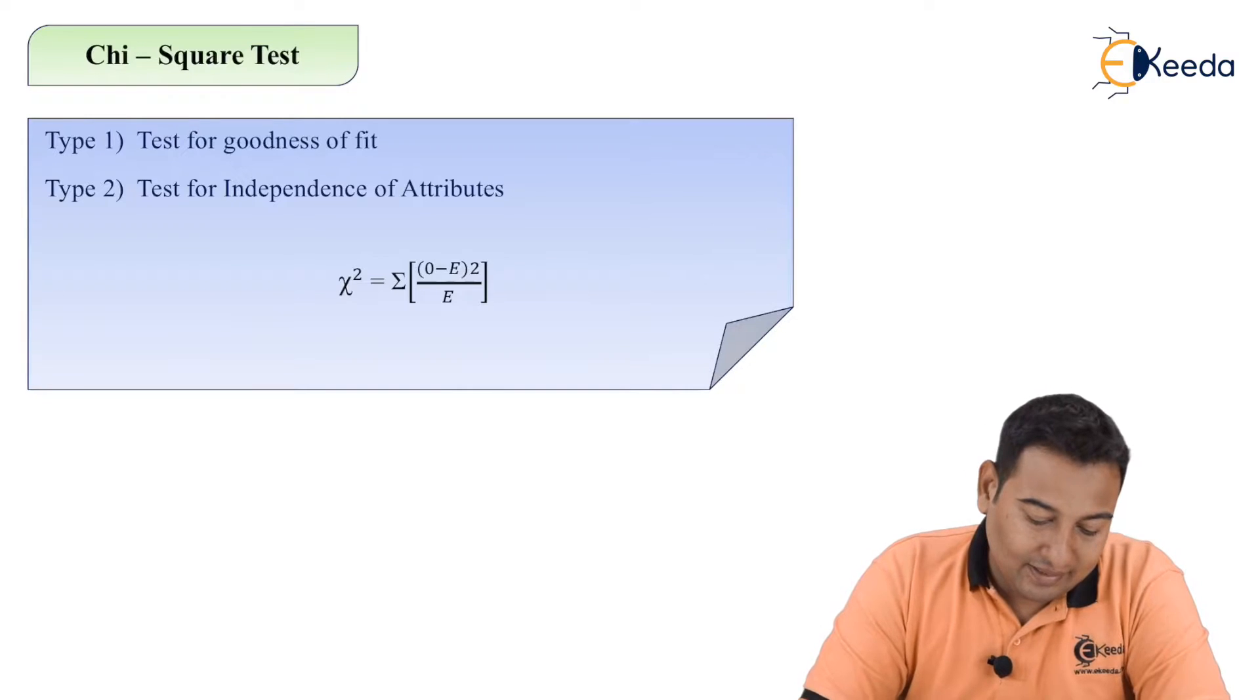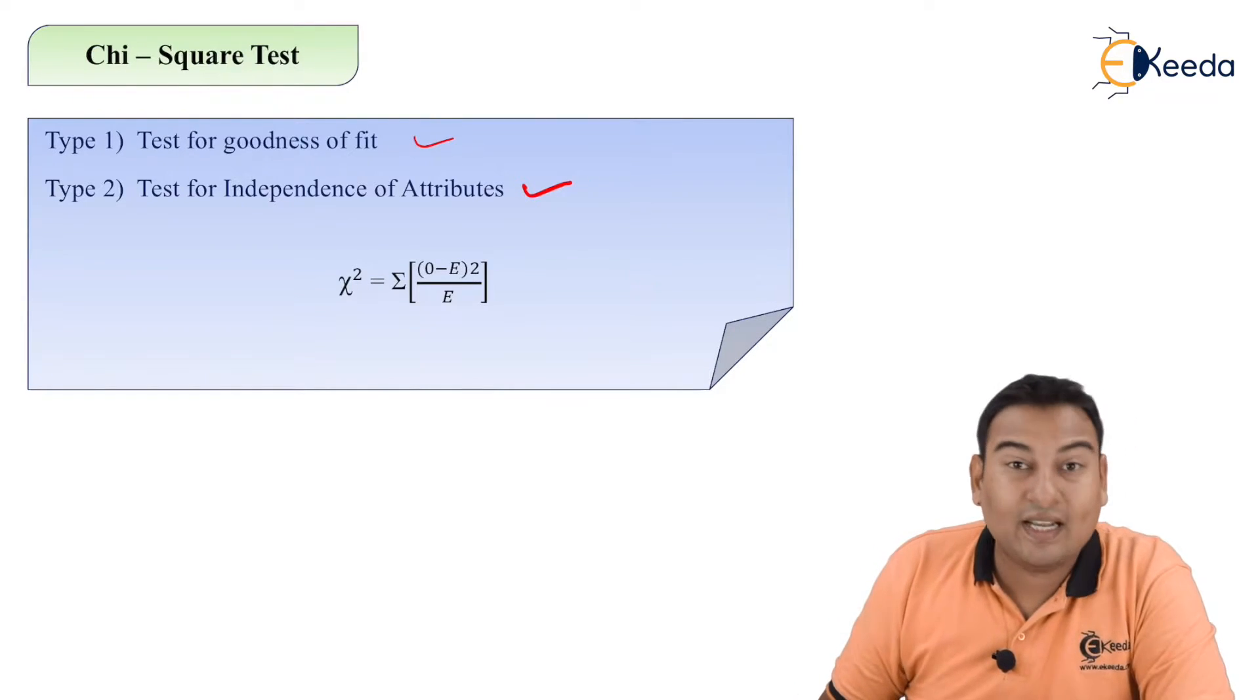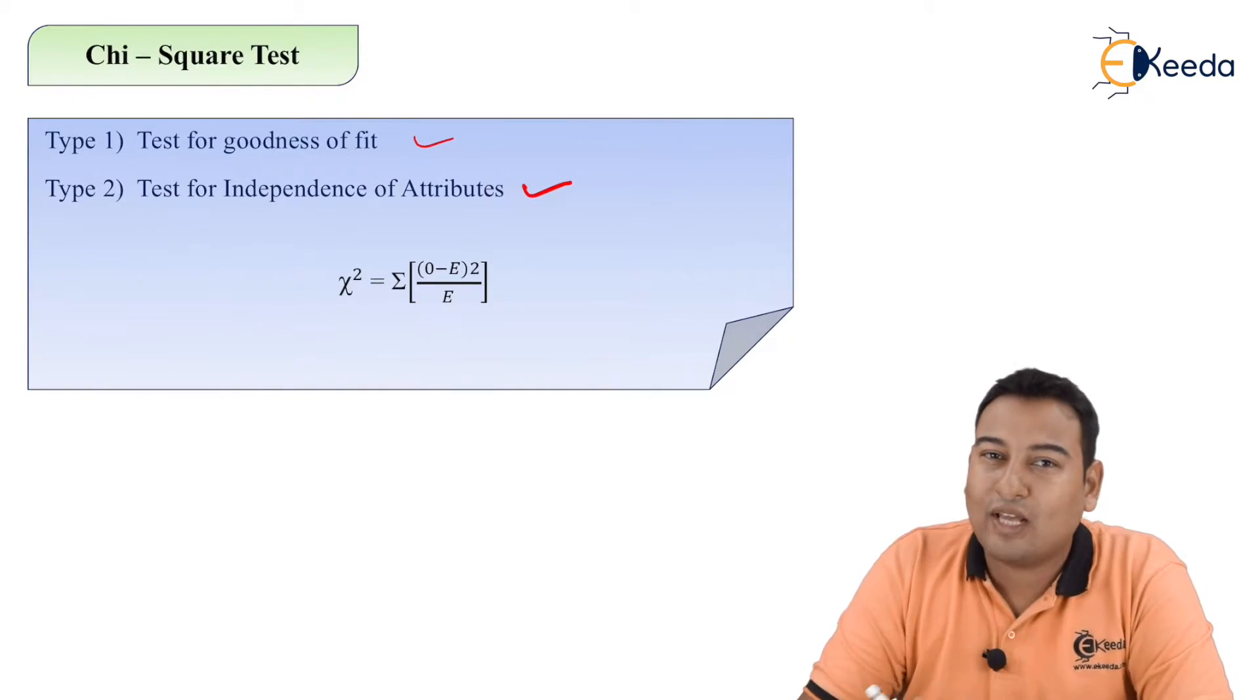Always remember, if problem is of sampling type you will get the words like mean, standard deviation, sample, population. Here the problems will be different. Let's discuss chi-square. There are two types in chi-square: the first is test for goodness of fit, and the second one is test for independence of attributes.